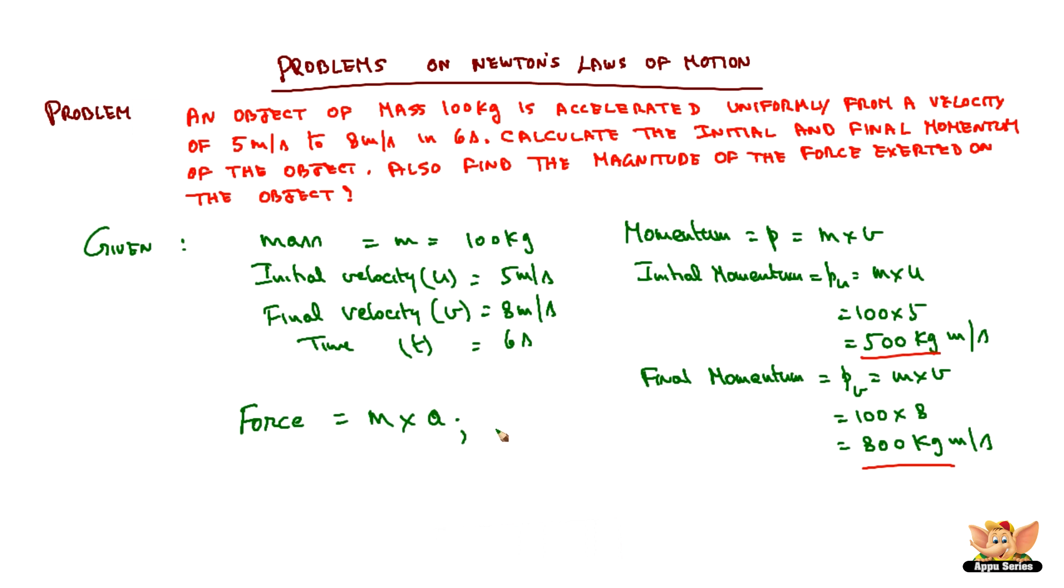So acceleration we can find from equation of motion: v is equal to u plus at. As we have the time and we have u and we have v, v is 8, u is 5, and a into 6. So a is equal to 8 minus 5 by 6, which is 3 by 6, so 1 by 2 meter per second square.